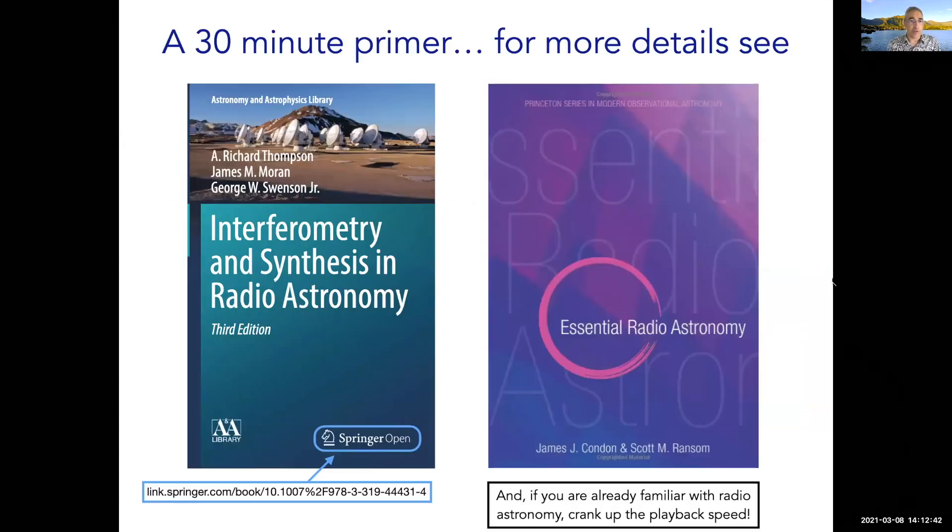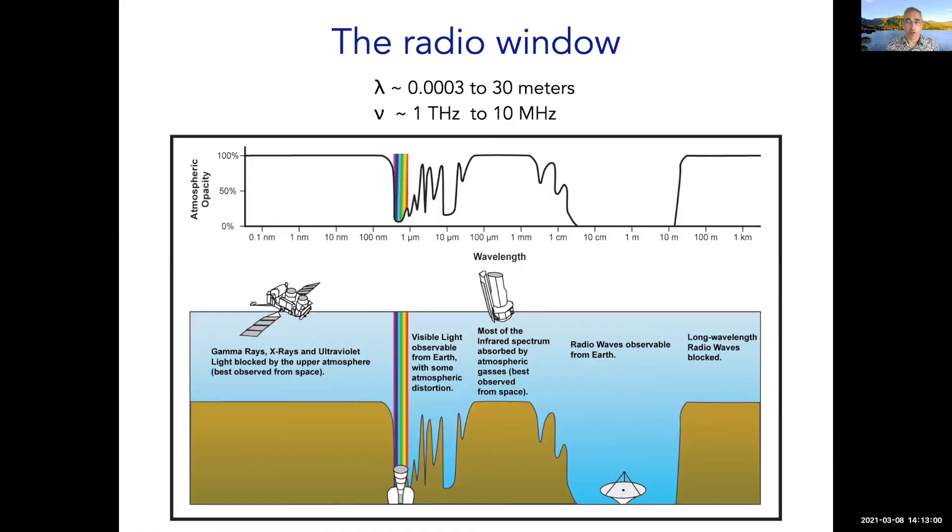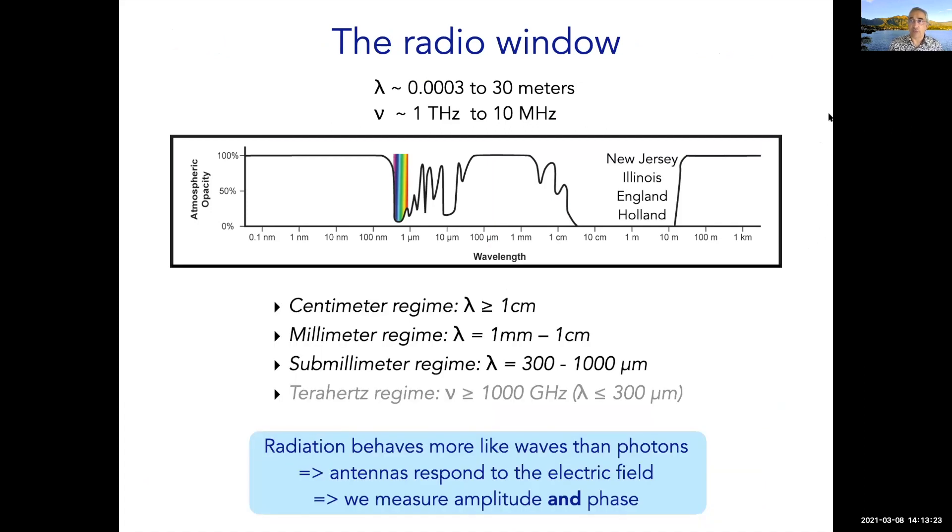Many of you may well be familiar with astronomy. You're welcome to skip this or just crank up the playback speed. The radio window ranges from a little below a millimeter to several tens of meters. The frequency range is from tens of megahertz to about a terahertz. In this range, the sky is fairly transparent, so we can observe from the ground. It's a very large range of wavelengths, five decades, and so we split it up into subgroups.